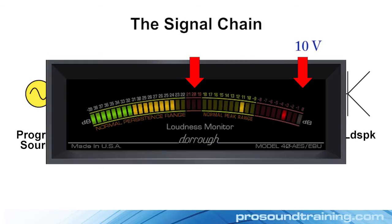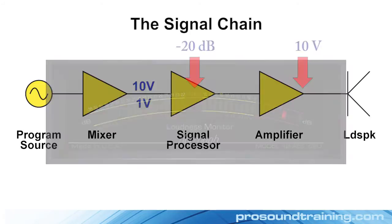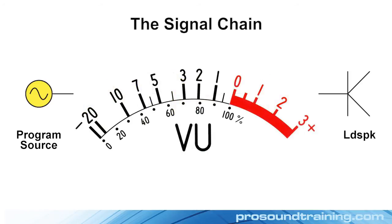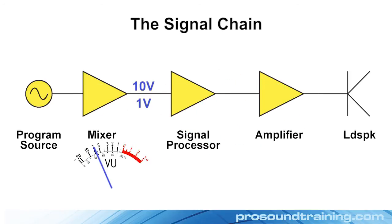The average signal level might be about 10% of the max, in this case 1 volt, and that's 20 dB below the maximum output voltage. For this mixer to have maximum signal-to-noise ratio, we want the signal peaks to get close to that 10 volts, and that puts the average voltage at about 1 volt. The mixer should have a meter on it that lets us know when we're there, in this case tracking the average voltage.